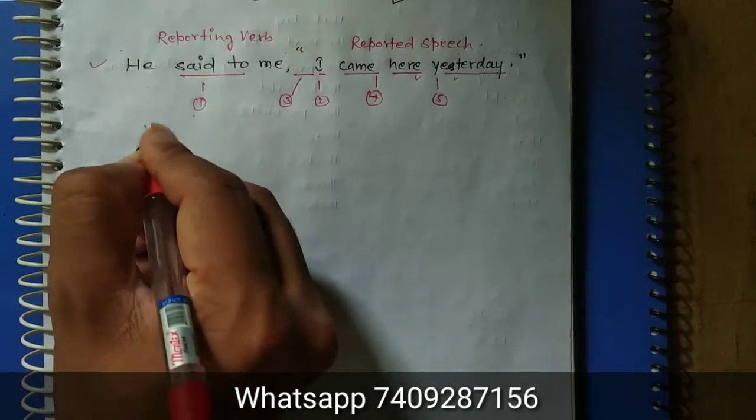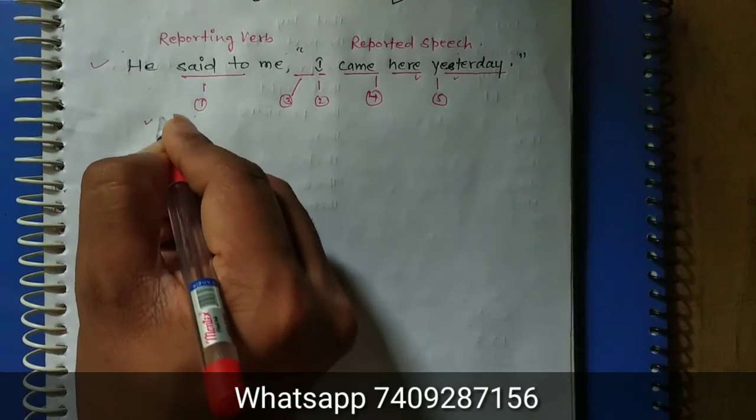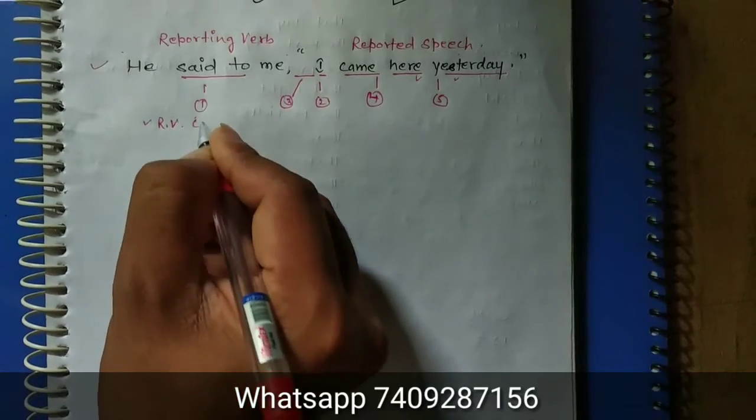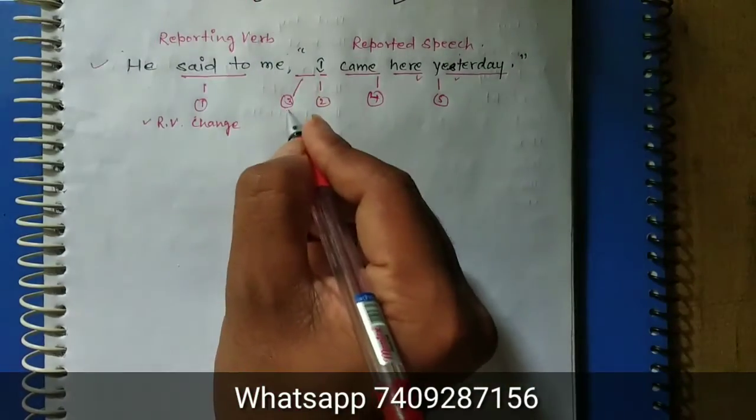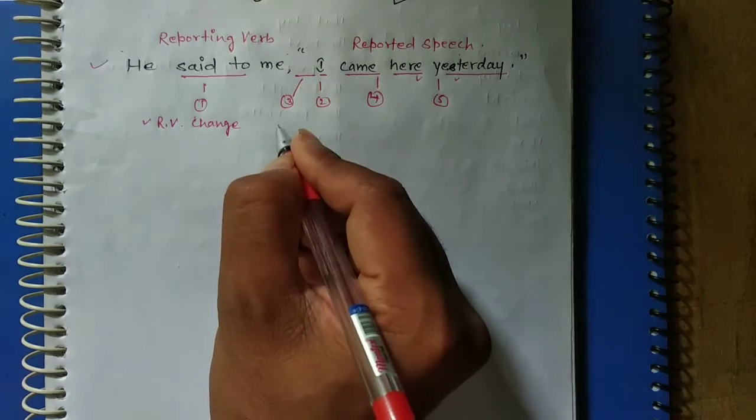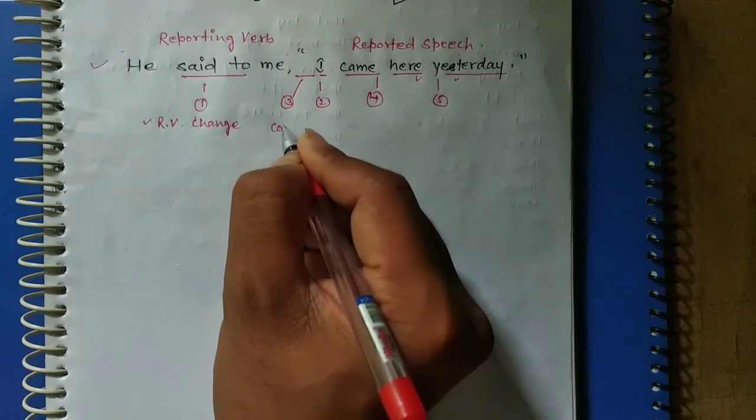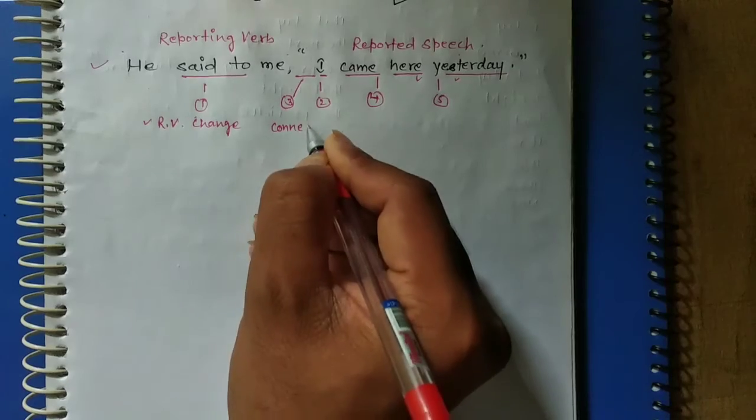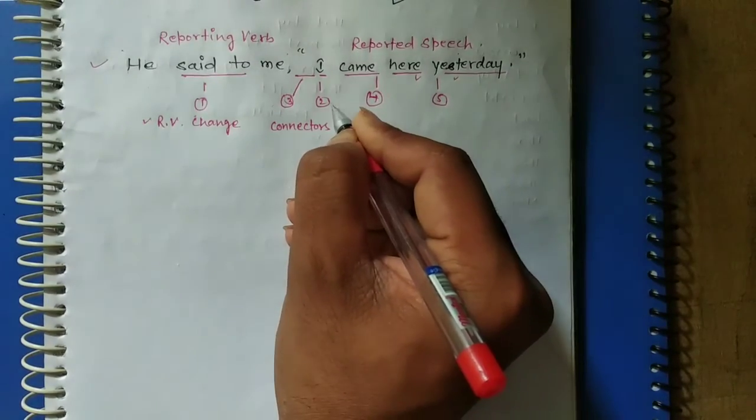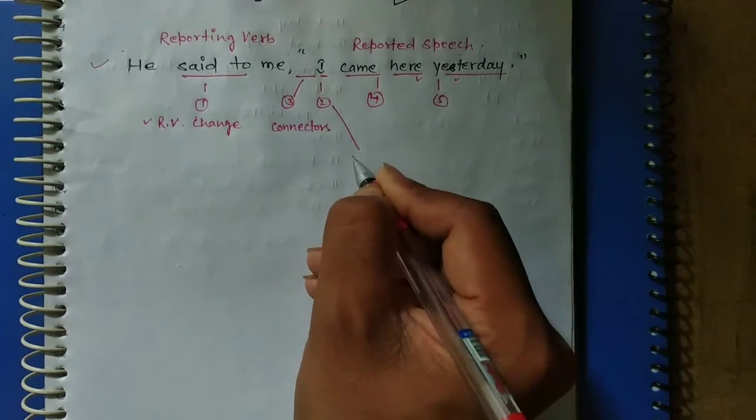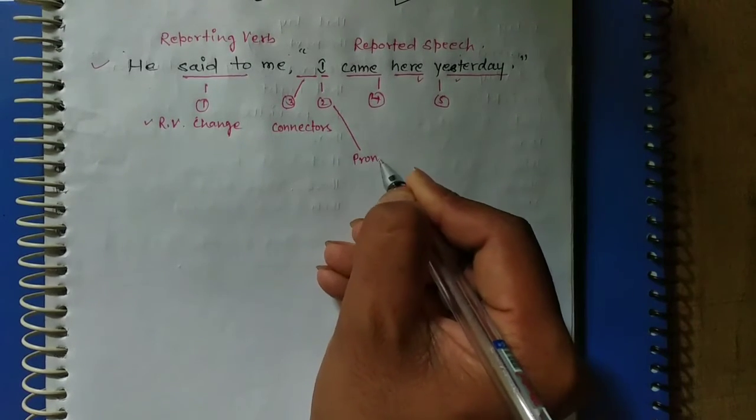We will call the first one reporting verb change. The second one I am calling change in connectors, or we will use the connectors here. And the third one is called the change in pronoun, so you must remember what pronouns are and the chart of the pronoun.